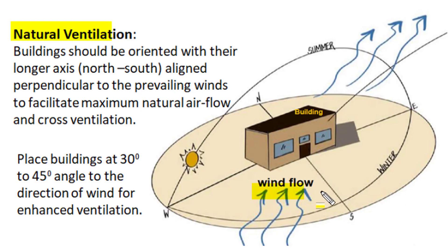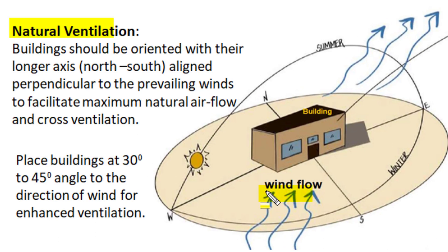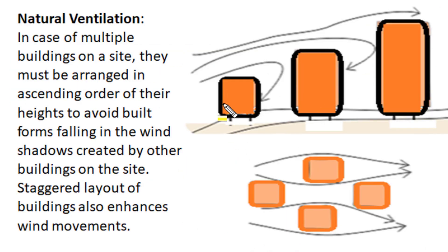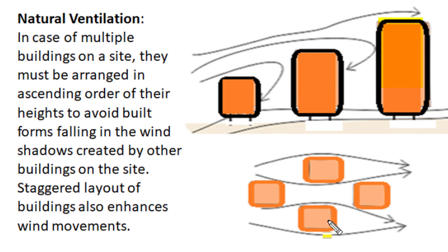For natural ventilation and air circulation, we should study diurnal and seasonal wind flow patterns surrounding the building. The building should be oriented with its longer axis aligned along the east-west direction, perpendicular to the prevailing wind direction, to facilitate natural airflow and cross ventilation. Placing the building at 30 to 40 degrees to the wind direction enhances natural wind movement and better ventilation. In case of multiple buildings on site, they must be arranged in ascending order of height, with taller buildings placed at the end of the wind flow direction to avoid wind shadow.